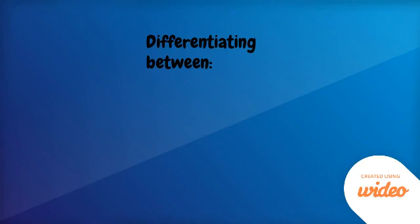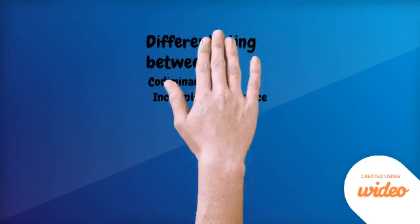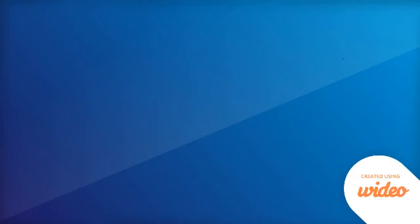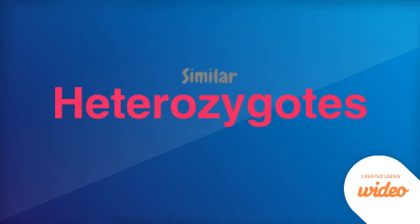Hi everyone! In this video, I'll be going over three terms you've learned and how to distinguish between them. The terms we have are codominance, incomplete dominance, and expressivity. These three things are seen in heterozygotes, so they might seem a bit similar, but that's why we have this video — to be able to differentiate between them properly.